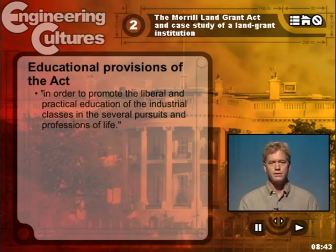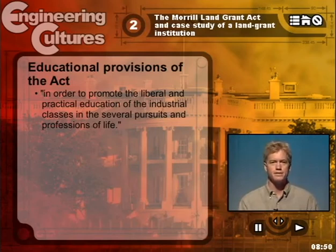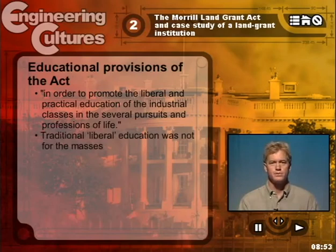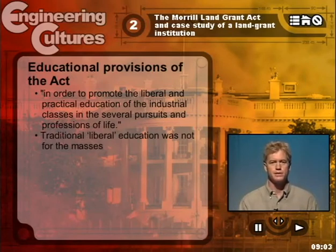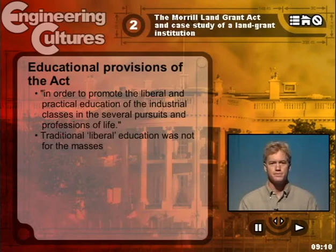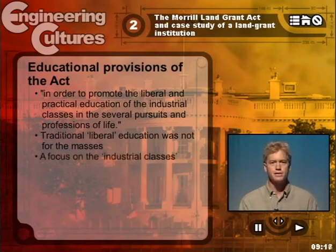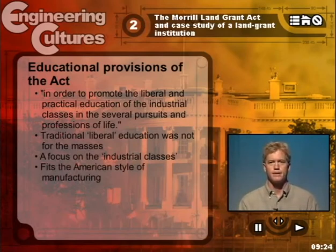In other words, the goal here is to expand education — the purview of higher education — for the masses in the United States. Traditional liberal education was not for the masses. There is a worry that this would be seen as just purely practical education, so the act stipulates that these schools had to undertake both practical and liberal education. The act targeted specifically the lower classes, described then as the industrial classes. This is very much part of the American style: providing low-cost goods for mass consumption while providing education for mass use fits the style.